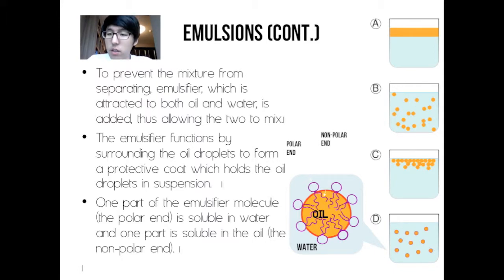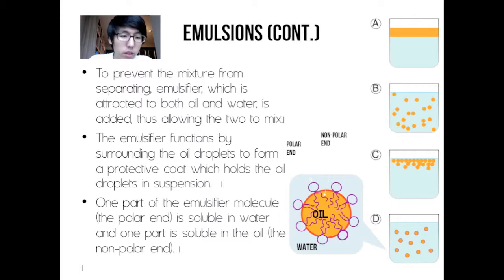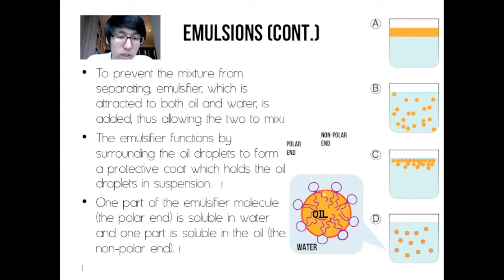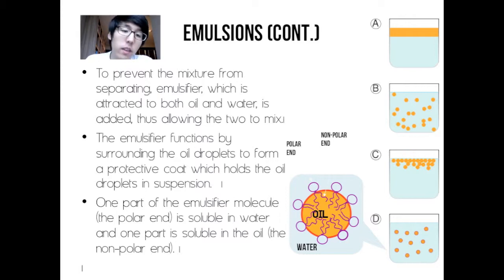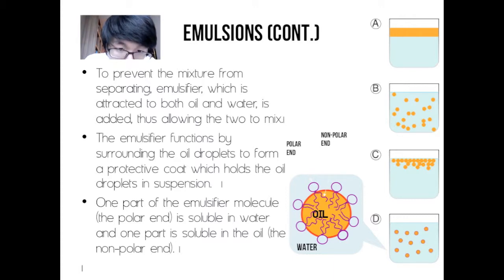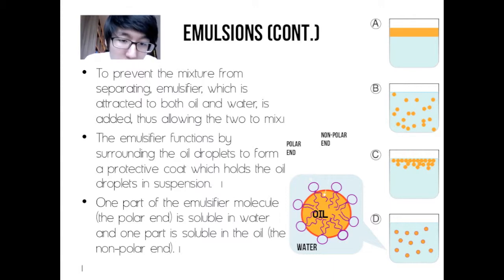If you look at A, the orange part is the oil while the blue is obviously water. B is where it tends to disperse, so the droplets you see are in the dispersed phase and the water is in the continuous phase. If you look at C, the molecules are rising to the top. And if you look at D, it shows a better definition of what each molecule looks like — the polar end is on the outside, which is like the purple rings, and the nonpolar end is the lines within the orange circle.